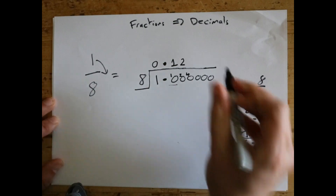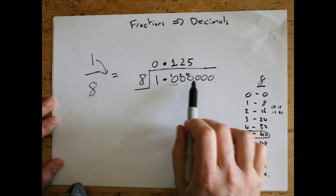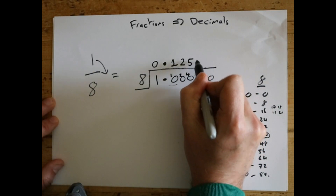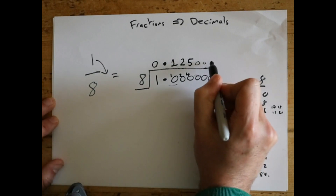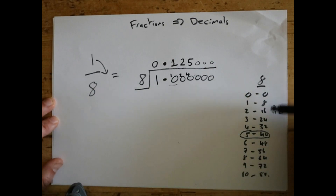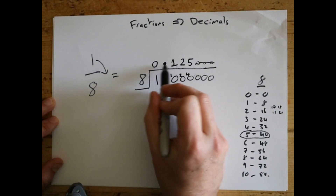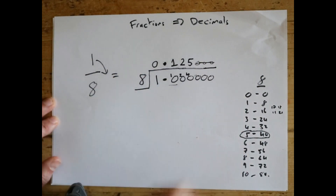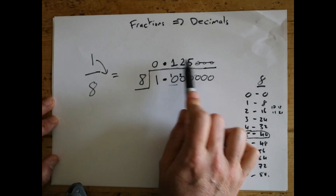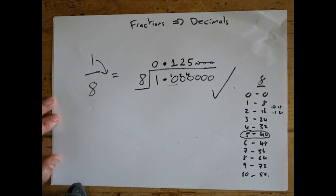Now we're looking at eight into forty. Eight into forty is five exactly, with no more remainder, so this is where we stop. If we carried on, eight into naught is naught, and you don't put zeros at the end of a decimal. As soon as you get to no remainder, that's where you finish. So one eighth equals 0.125 — if you do one divided by eight on your calculator it should come up with 0.125, which is correct.